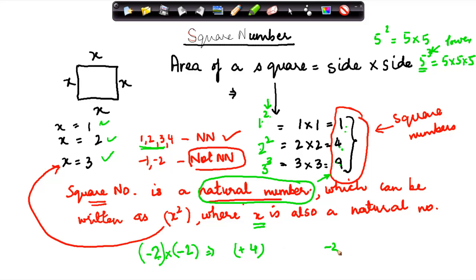Now can this be written as minus 2 square? Think over it. But is this a natural number? No. But 4 is a square number, right? Because 4 can also be written as 2 square. So the fact that 4 is also equal to minus 2 square does not necessarily mean that 4 is not a square number. 4 is still a square number because 4 can also be written as 2 square.